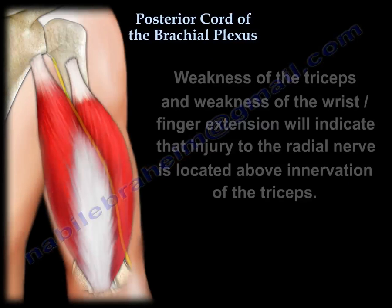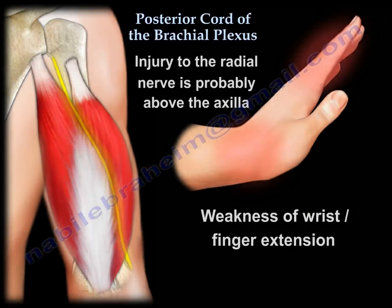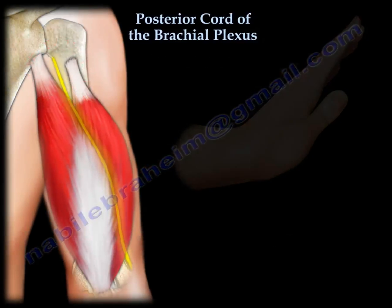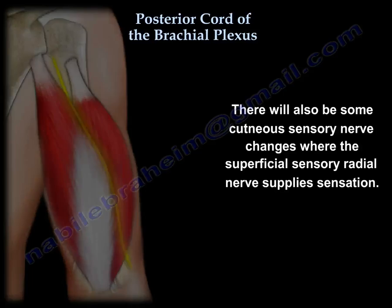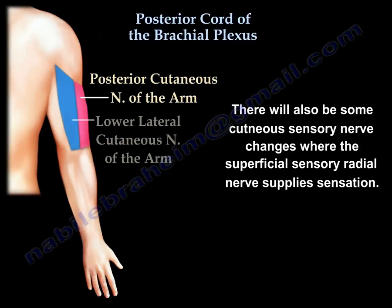Weakness of the triceps, wrist extension, and finger extension indicates that the radial nerve is injured above the innervation of the triceps — it is probably injured in the axilla or above. This is also accompanied by cutaneous sensory changes.